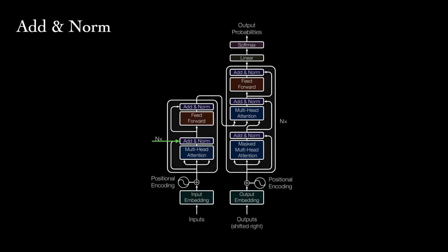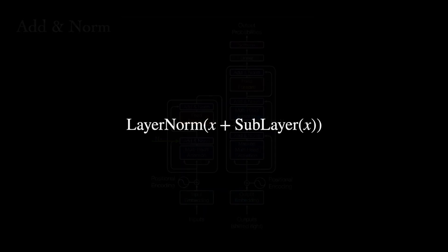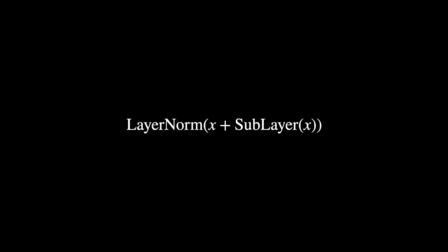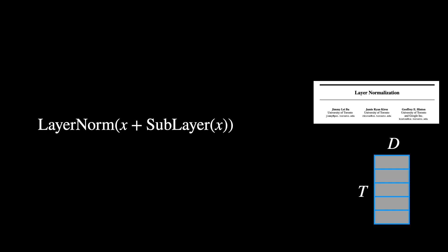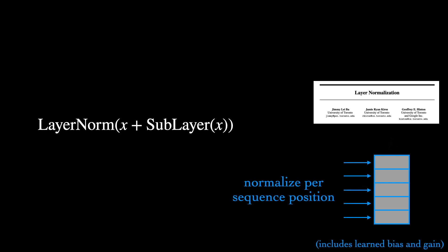Now, multi-head attention is the first of two sub-layers of an encoder layer. After each sub-layer, we apply both a residual connection and layer normalization. The residual connection just adds a copy of the input to the output, so the word representations before the multi-head attention block are added to the output representations. Then, layer normalization takes our word vectors and normalizes each one individually to have zero mean and variance 1. This was originally proposed for recurrent neural networks as a way to stabilize training, but helps transformers too.